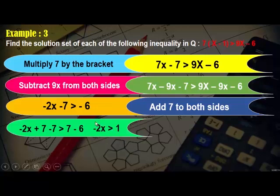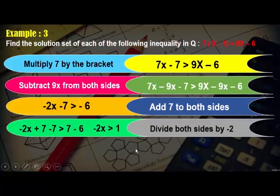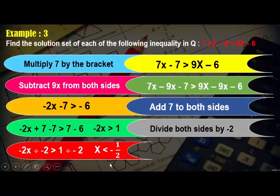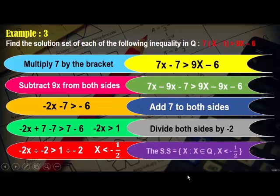Now divide both sides by negative 2: negative 2x divided by negative 2 is greater than 1 divided by negative 2, giving x is less than negative one-half. The sign changed because we divided by a negative number. The solution set equals the set of x where x belongs to Q and x is less than negative one-half.